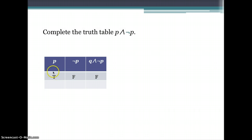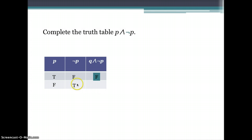If the first proposition P is false, then negating false gives us true. From the conjunction truth table, when P is false and the second proposition is true, P and not-P is false.